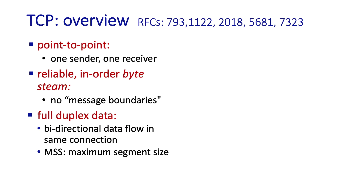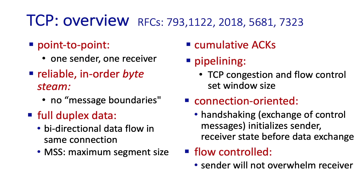TCP operates in a point-to-point manner, that is between one sender and one receiver. The semantics of its reliable data transfer is that of an in-order byte stream — we should contrast that with UDP, which is message-oriented. TCP implements a reliable byte stream abstraction. TCP is also full duplex, meaning that data payloads can flow in both directions. The data contained as a payload in a TCP segment has a maximum segment size of MSS, typically 1460 bytes in practice.